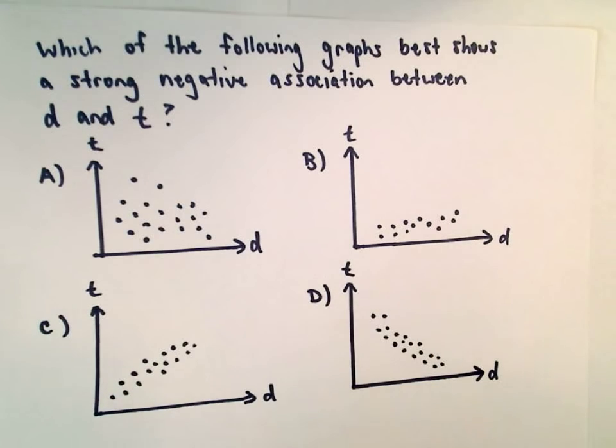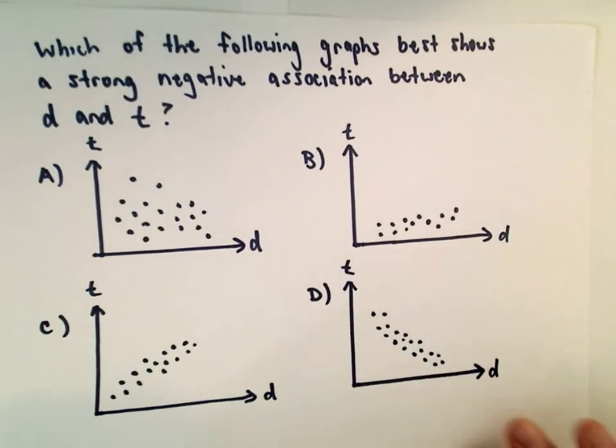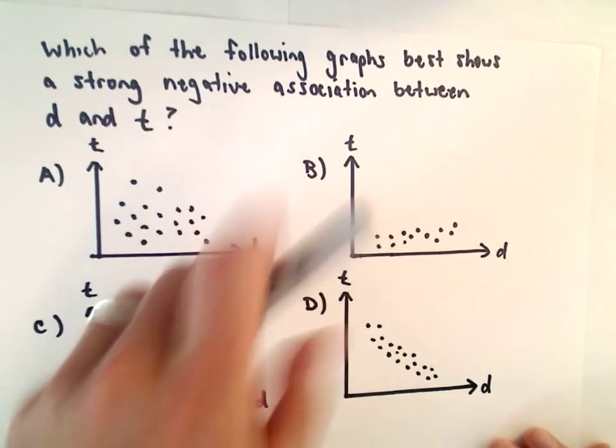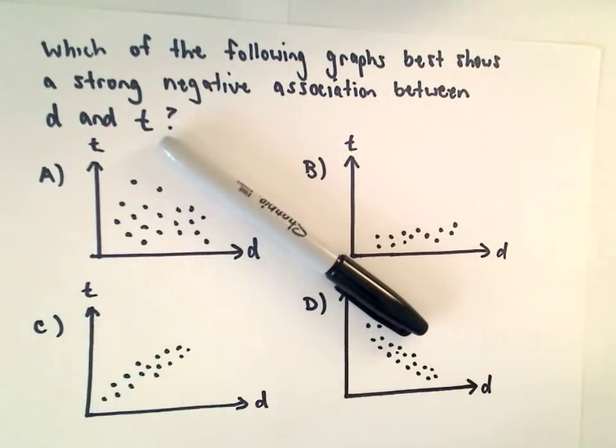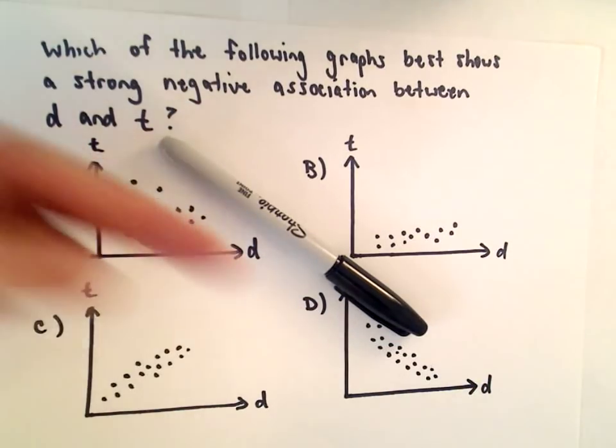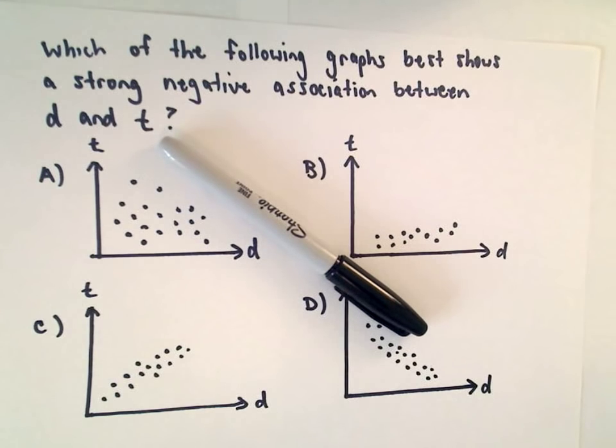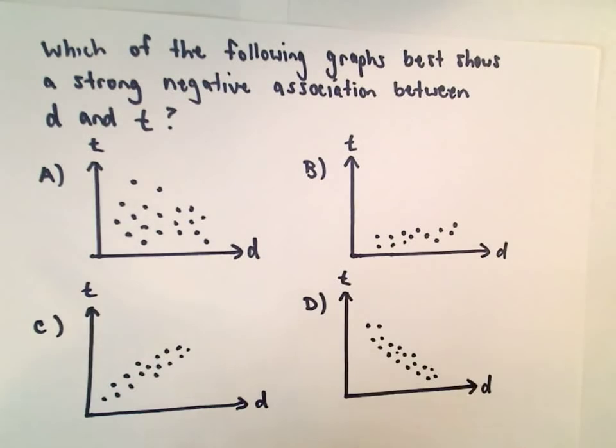For it to be strong, we want the dots to be bunched close together. You can think about negative as being like a negative slope - a line that has negative slope is pointing down as you move left to right.